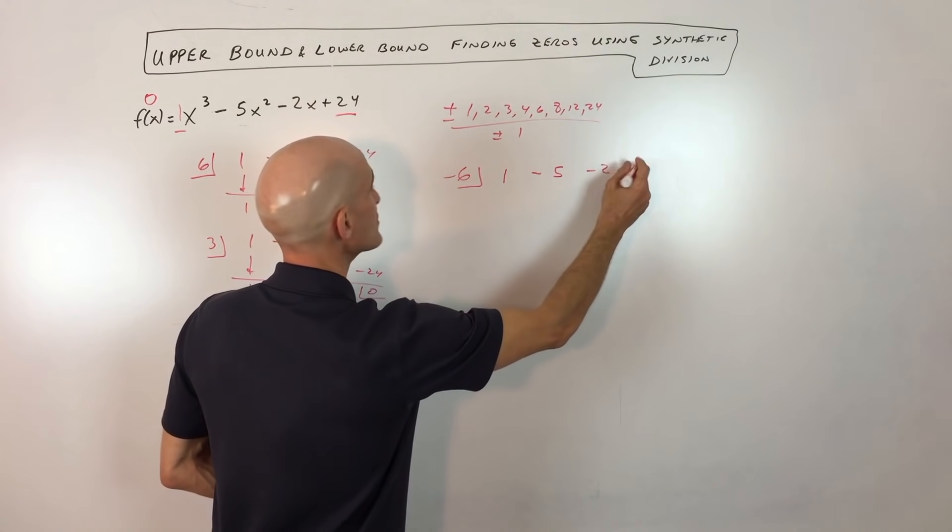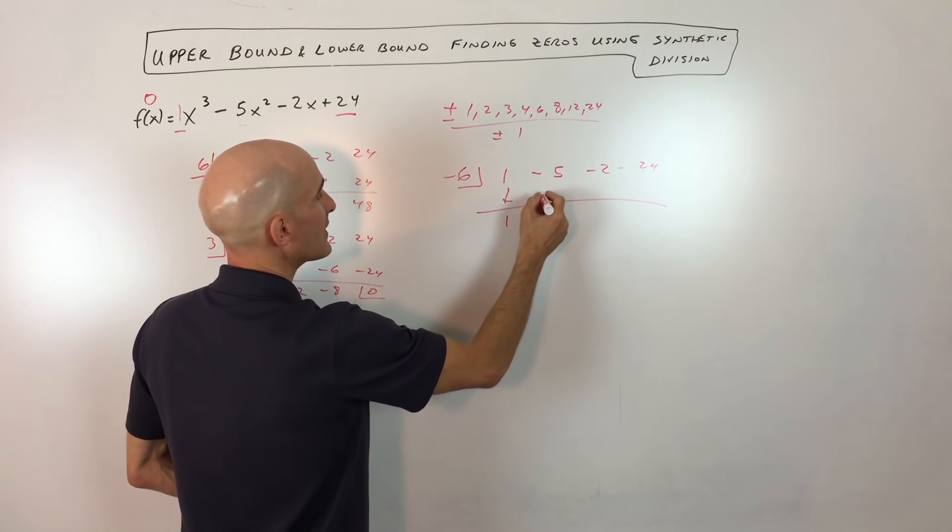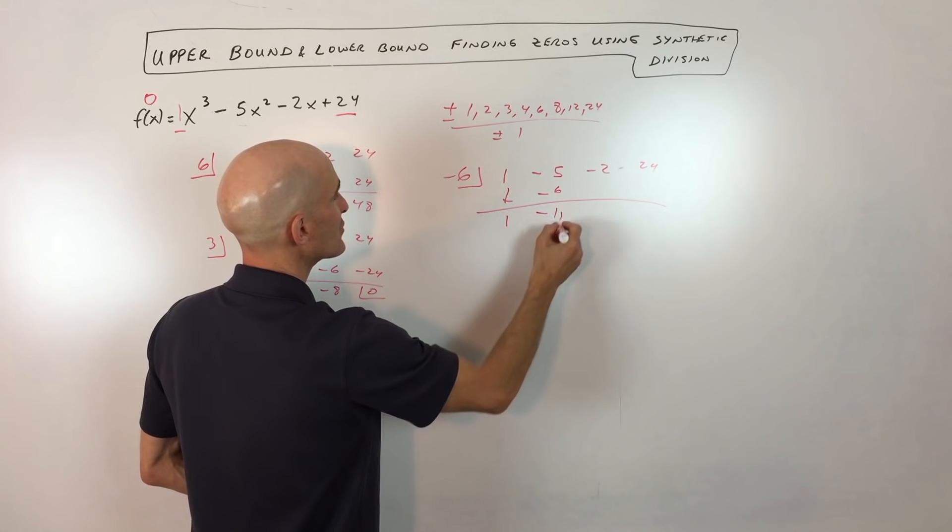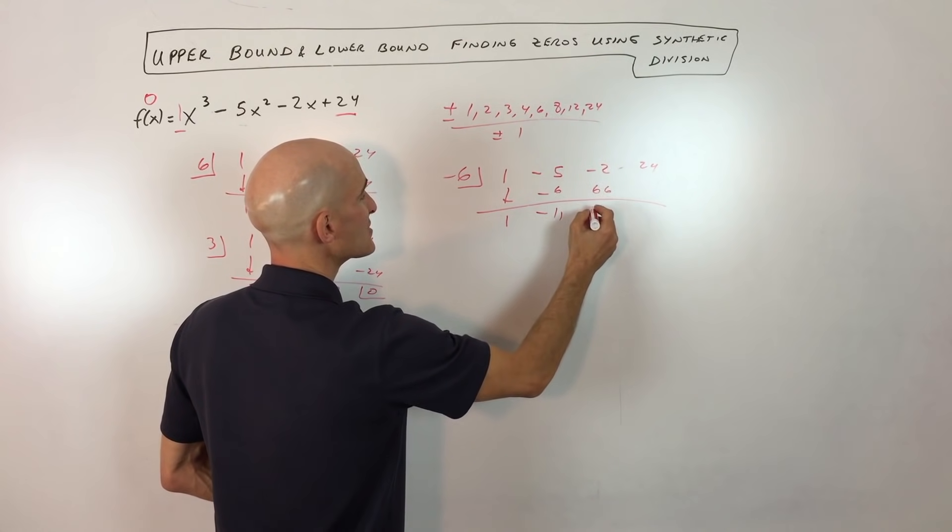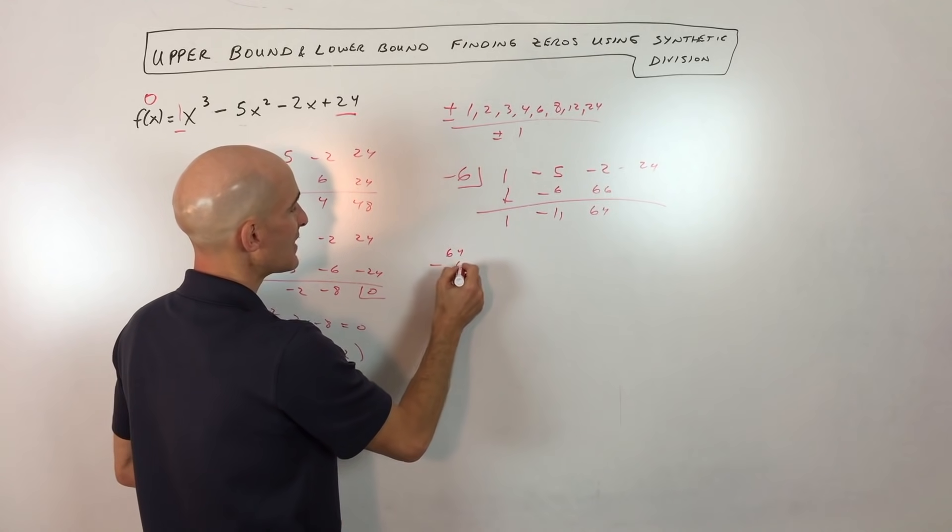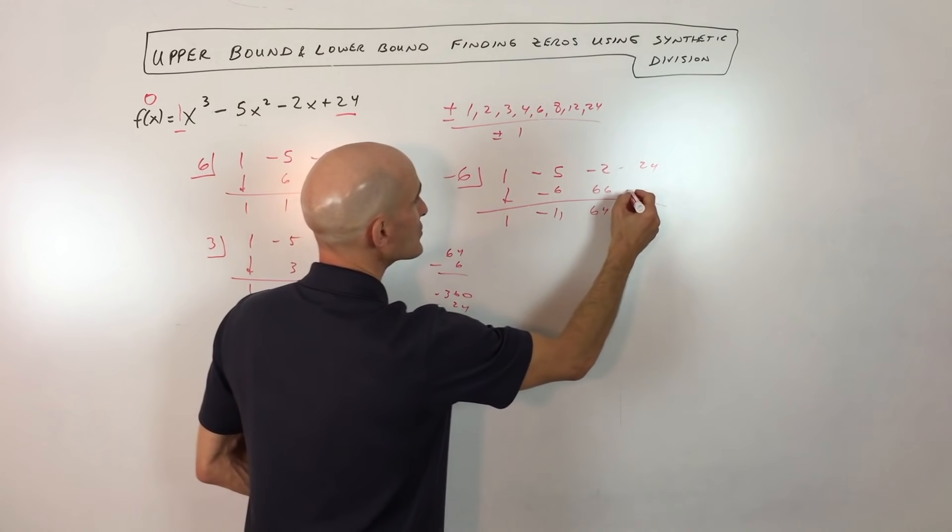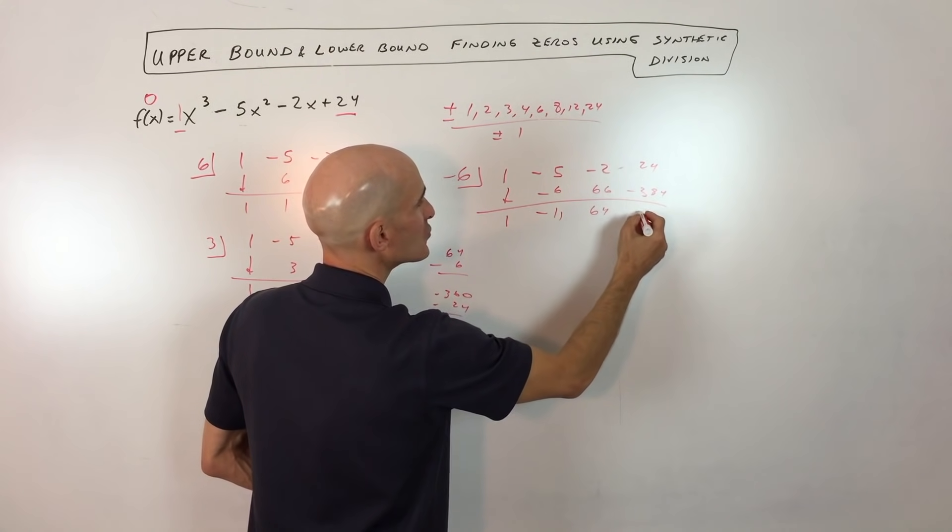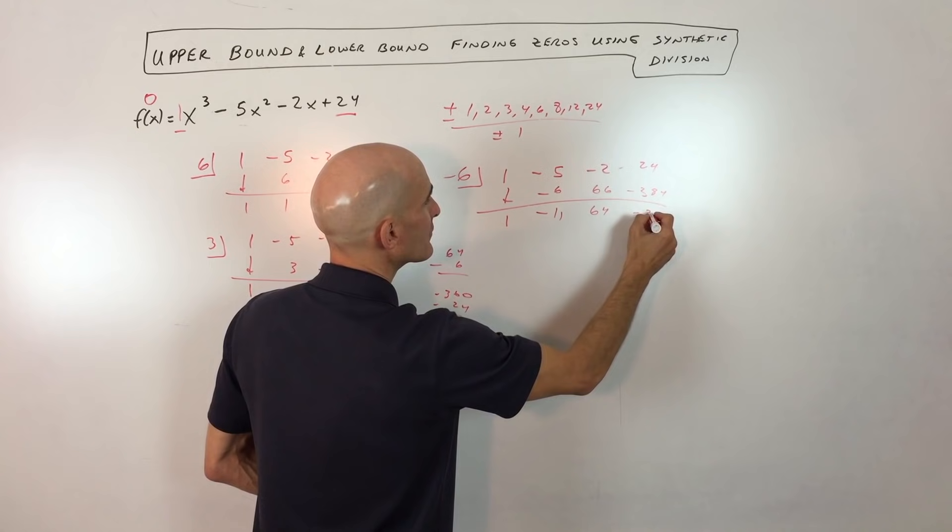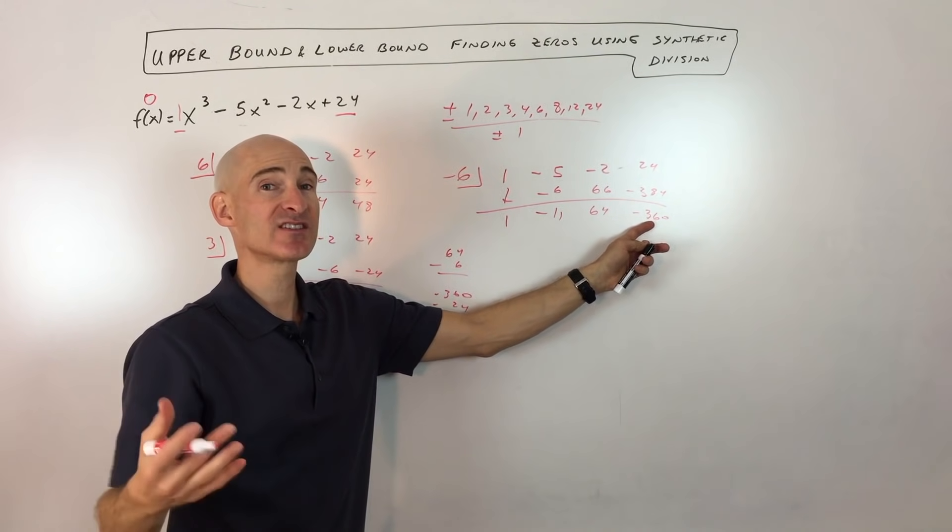So I'm checking negative six. If I bring down one, I get negative six. This comes out to negative 11. This is positive 66. This is 64. And let's see, what's 64 times negative six? Well, it'd be negative 360 and 24. So that's a negative 384. So negative 384 plus the 24, which would be negative 360. Now you can see that this didn't come out to zero. So negative six is not a zero.